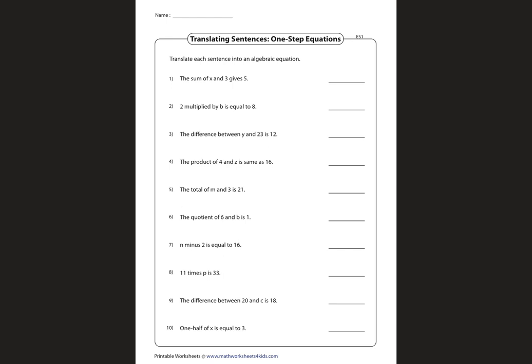The sum of x and 3 gives 5. What's different for the equation worksheet is that 'gives' means equals. So the sum of x and 3, x plus 3, gives or equals 5. So let's go on to the next one.